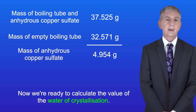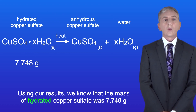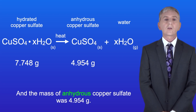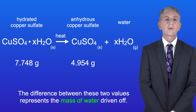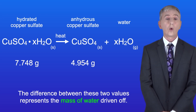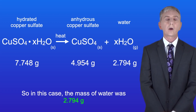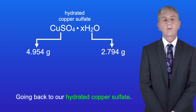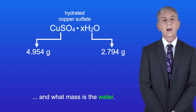Now we're ready to calculate the value of the water of crystallization. Using our results, the mass of hydrated copper sulfate was 7.748 grams and the mass of anhydrous copper sulfate was 4.954 grams. The difference between these two values represents the mass of water driven off, so the mass of water was 2.794 grams. We now know what mass is the copper sulfate and what mass is the water.